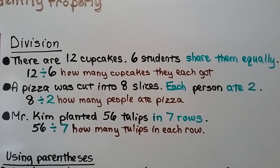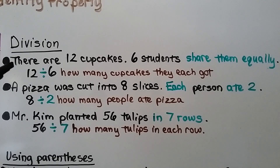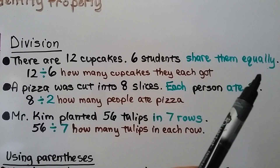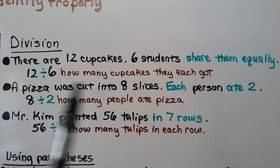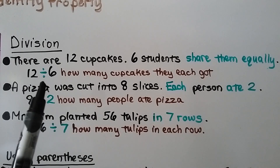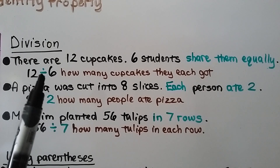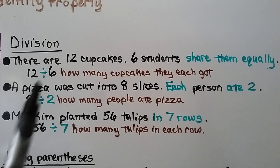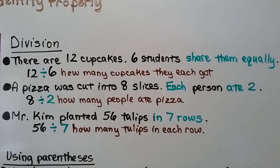For division: there are 12 cupcakes and 6 students share them equally. Because they share them equally, we know they need to be put into equal groups. We write 12 divided by 6 for how many cupcakes they each got.